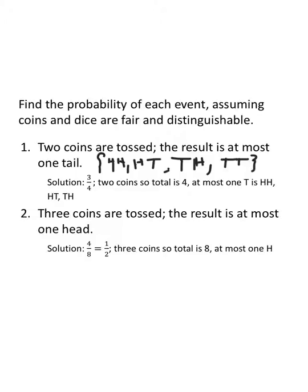At most one tail. At most one tail means no more, so zero or one tails. This has zero tails, one tail, one tail. So there's three of them. Two coins gives us a total of four outcomes. At most one tail includes HH, HT, and TH. Therefore, the probability is three-fourths.